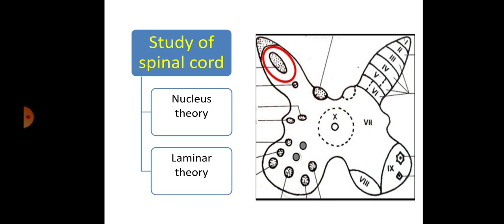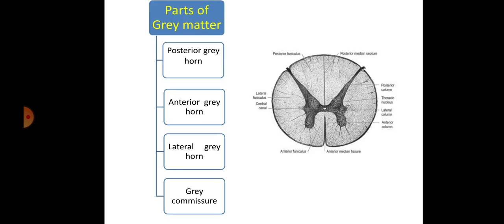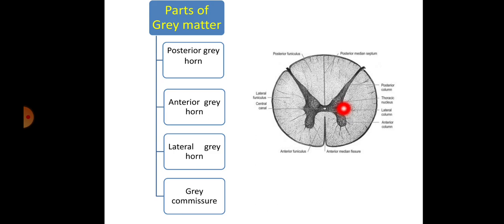In this video, I am also covering comparison between the nuclear theory and the laminar theory. First we are going to discuss the parts of the grey matter. The grey matter is H-shaped. Its parts are: the posterior grey horn, the anterior grey horn, the lateral grey horn, and the right and left grey matter communicating each other in the center — that is called grey commissure. We will discuss each one by one, starting with the posterior grey horn.